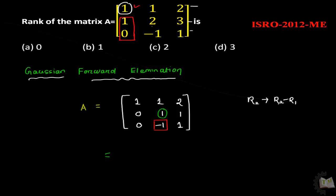Then what will you do? This is row 3. Row 3 equal to, if you add these two terms then this term will be 0. Write down again 1, 1, 2, 0, 1, 1. 0 minus 1 plus 1 that is 0, 1 plus 1 that is 2.